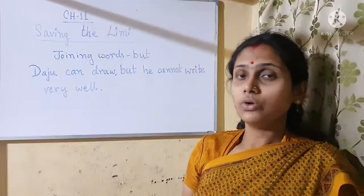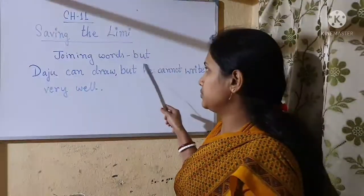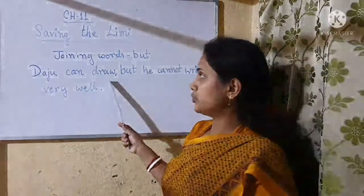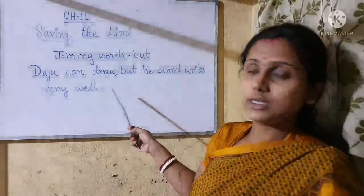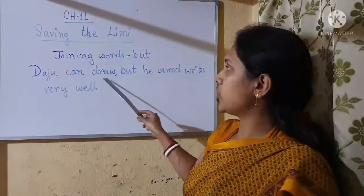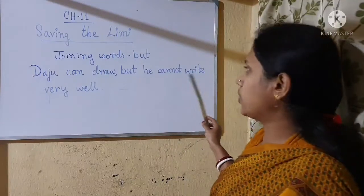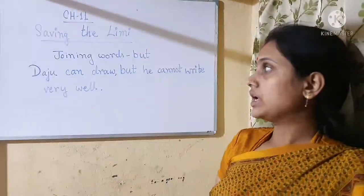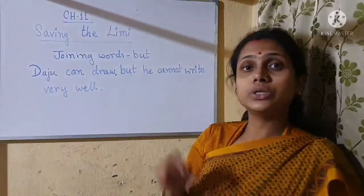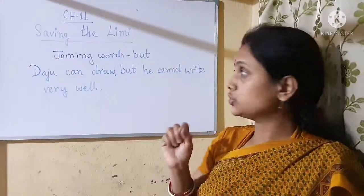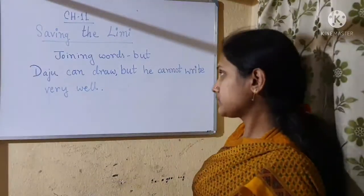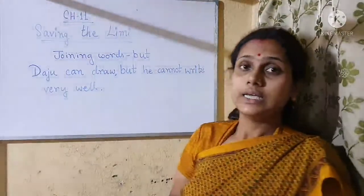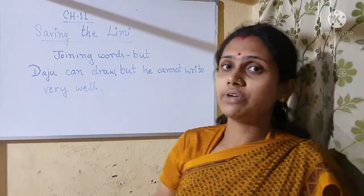So how we will use this 'but'. Here is one sentence on the board, all of you can see. 'Daju can draw but he cannot write very well.' So what is the meaning? Daju can do the drawing, Daju can draw nicely, but he cannot write very well — his writing is not very good.